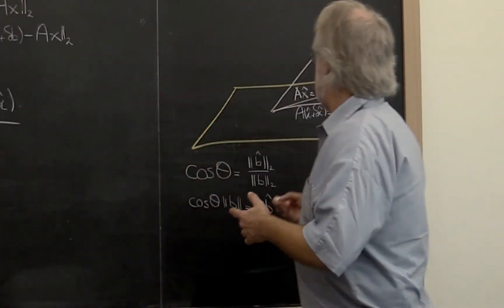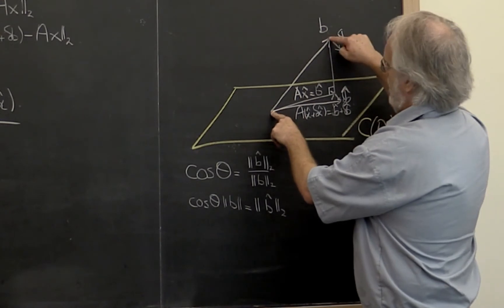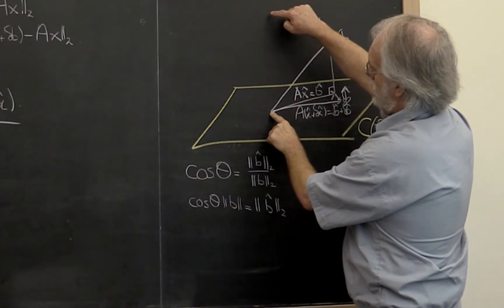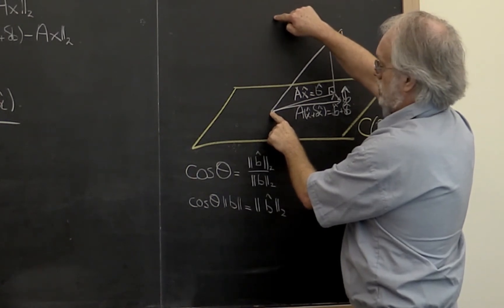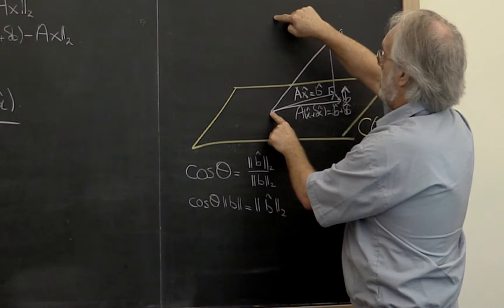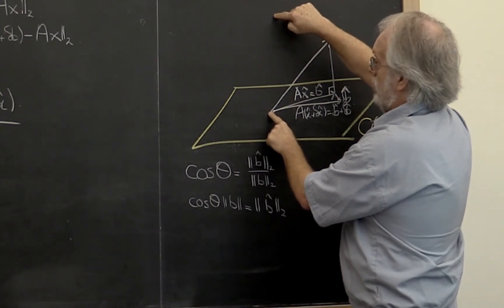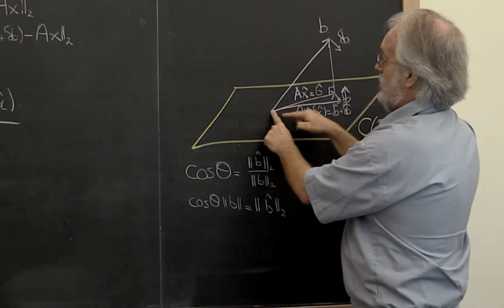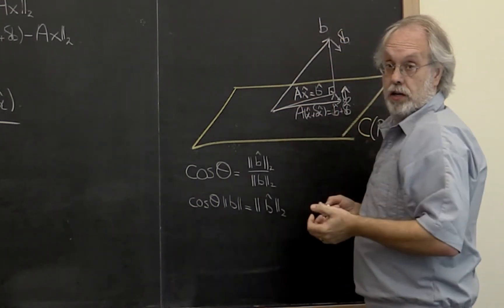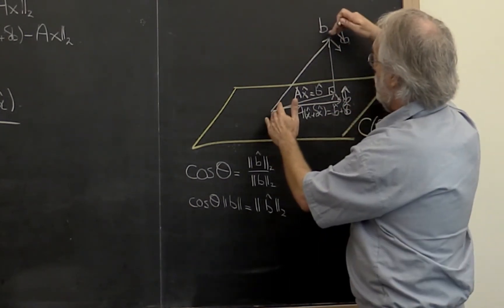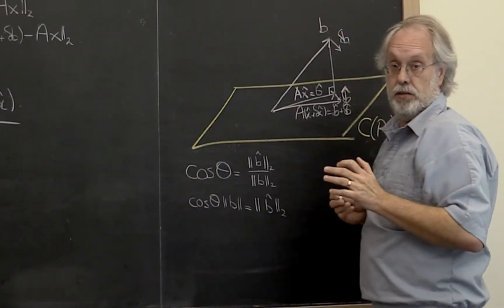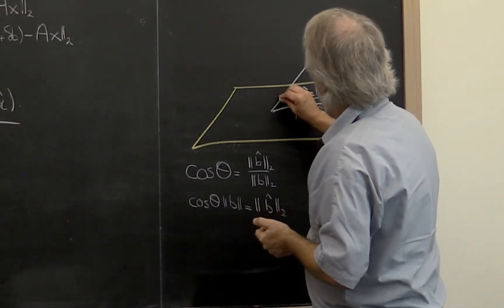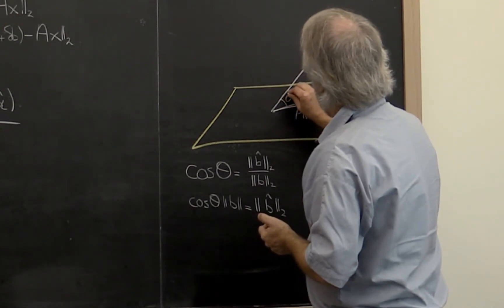You can imagine that the angle between b and the column space of A is important. If b was almost orthogonal to the column space of A, then b could be very large, δb could be relatively small, but the change in the solution could be very large. So somehow this angle between b and the column space of A we would expect to come into the picture. Let's call that angle θ.